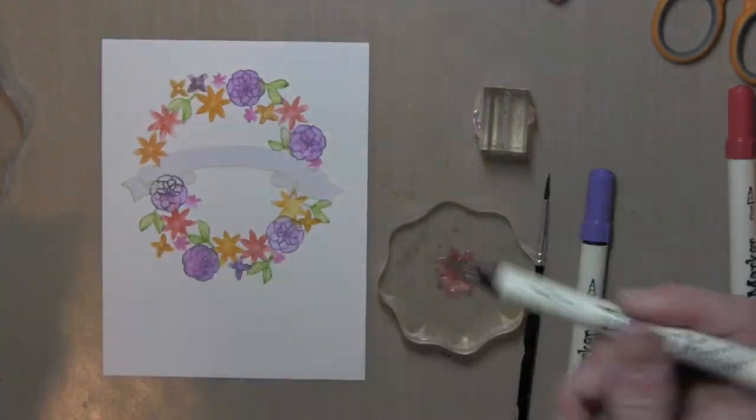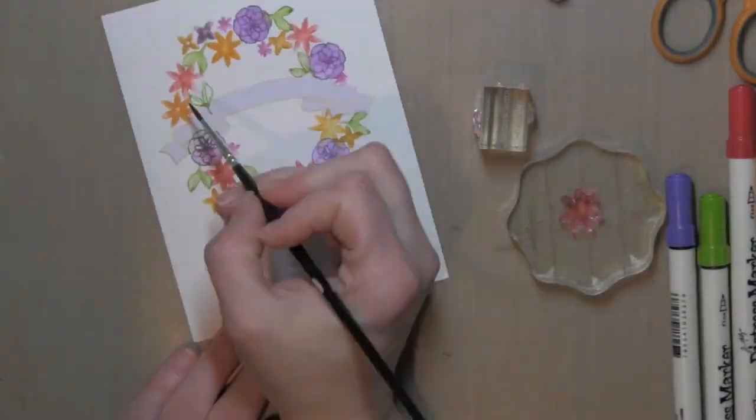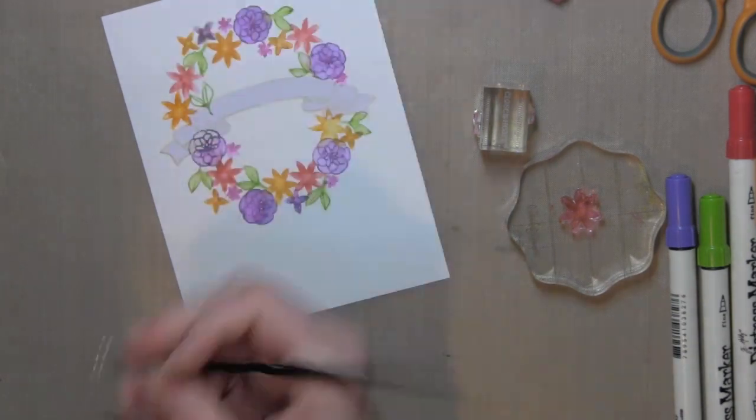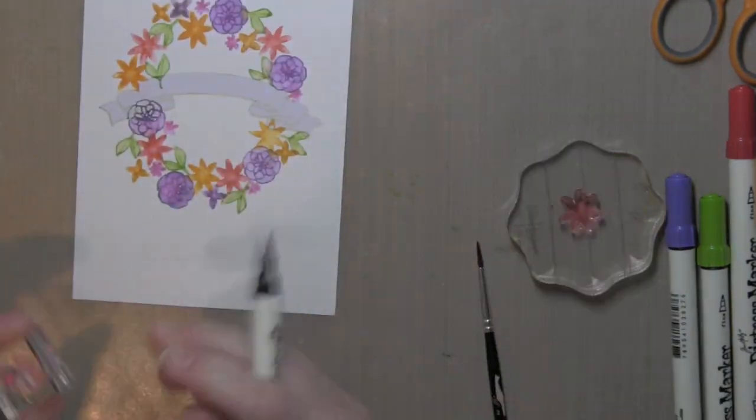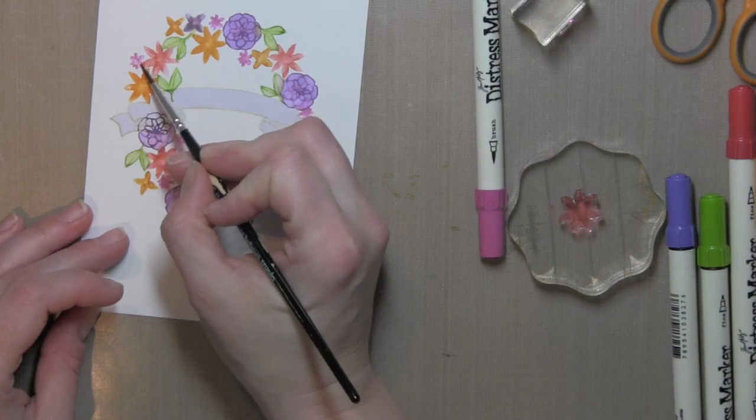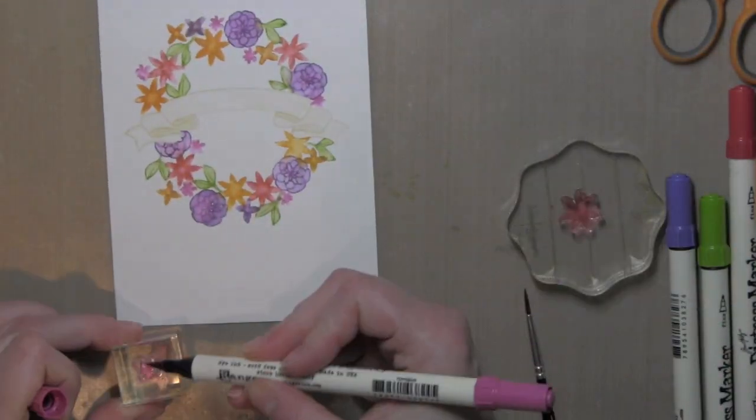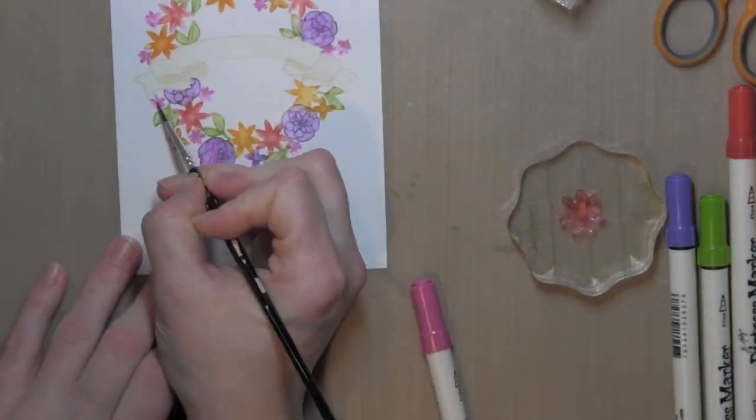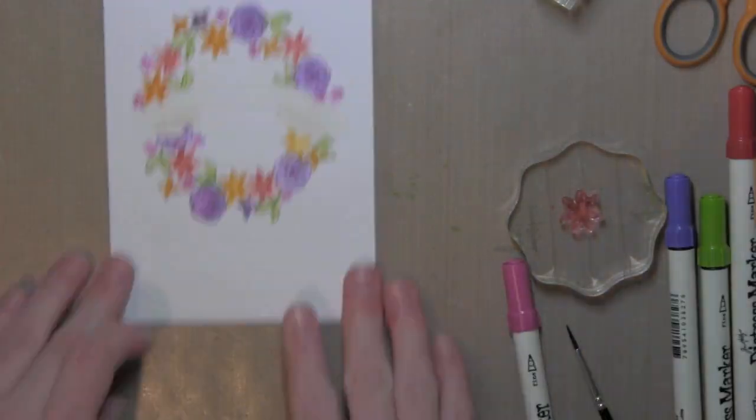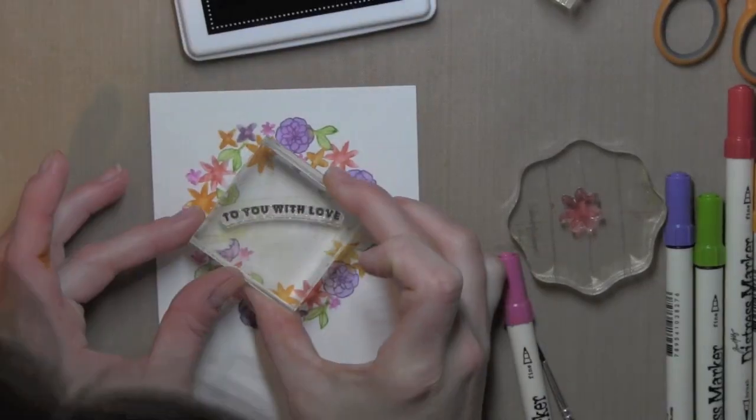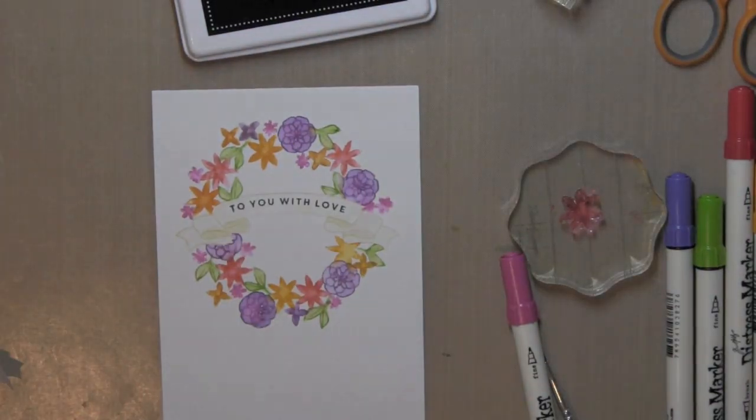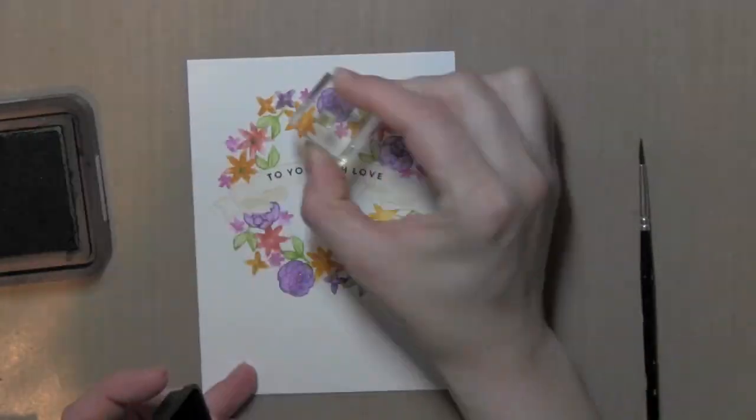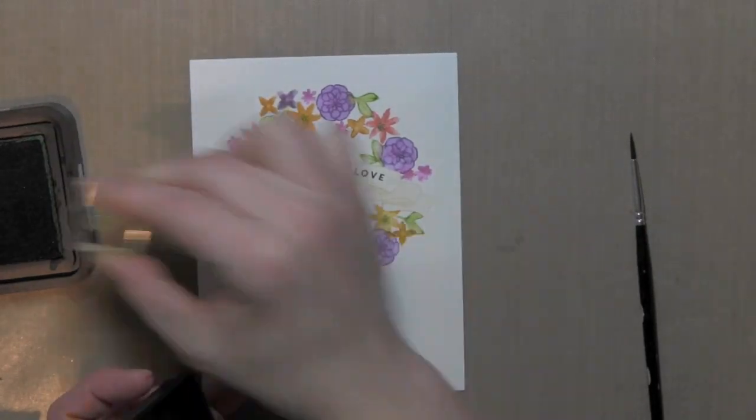Now once I have all of my florals in place I can remove that mask and I'm ready to stamp my greeting. I did end up filling in with a few more greenery type things and flowers here and there once I've removed that. I'm just going to use a nice black ink. This is from My Favorite Things to stamp the To You With Love greeting there.